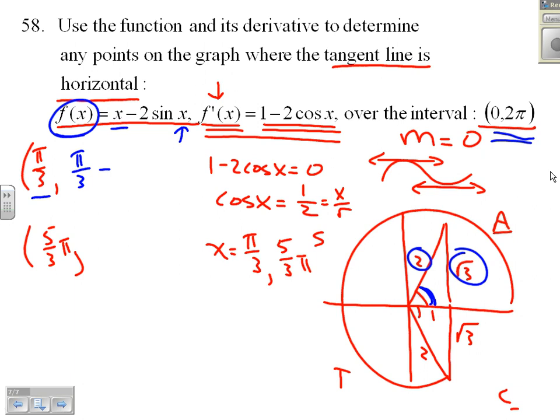But sine of pi on 3 is right here, is our y on our r, root 3 on 2. Root 3 on 2 is sine of x times negative 2, gives me negative root 3.